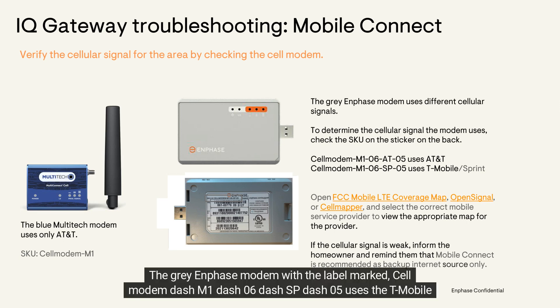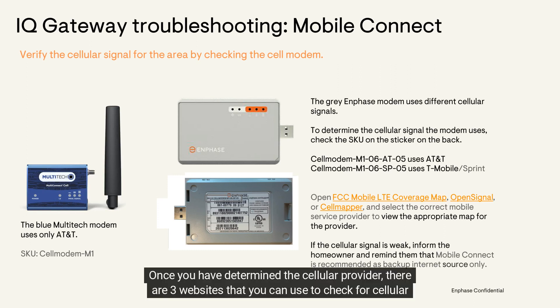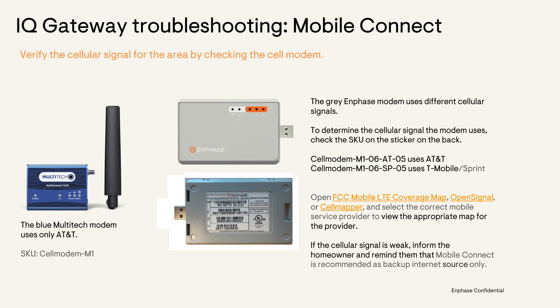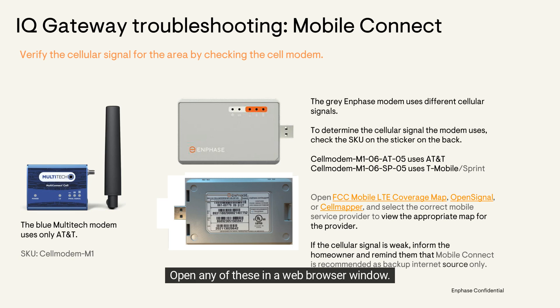The gray SKU modem with the label marked Cell Modem dash N1-06-SP-05 uses the T-Mobile network. Once you have determined the cellular provider, there are three websites you can use to check for cellular coverage in your area: the FCC Mobile LTE Coverage Map, OpenSignal, or CellMapper websites.